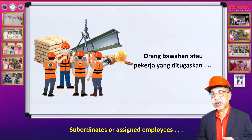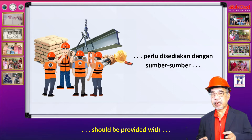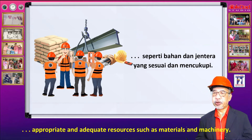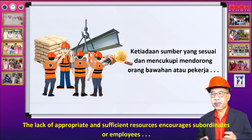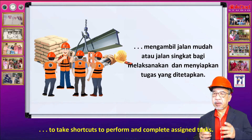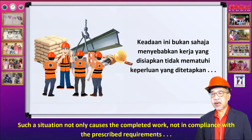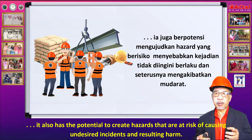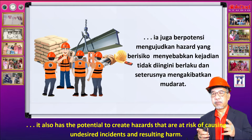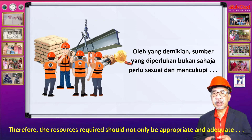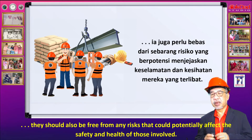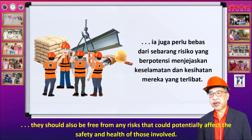Orang bawahan atau pekerja yang ditugaskan perlu diperuntukkan dengan sumber-sumber seperti bahan dan jentera yang sesuai dan mencukupi. Kekurangan sumber yang sesuai dan mencukupi mendorong orang bawahan atau pekerja mengambil jalan mudah atau jalan pintas bagi melaksanakan dan menyiapkan tugas yang diarahkan. Keadaan ini bukan sahaja menyebabkan kerja yang disiapkan tidak memenuhi keperluan yang ditetapkan, ia juga berpotensi menimbulkan hazard yang bersifat menyebabkan kejadian tidak diingini berlaku. Oleh yang demikian, sumber yang diperlukan bukan sahaja perlu sesuai dan mencukupi, ia juga perlu bebas dari sebarang risiko yang berpotensi menjejaskan keselamatan dan kesihatan mereka yang terlibat.